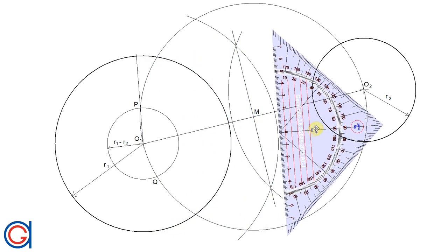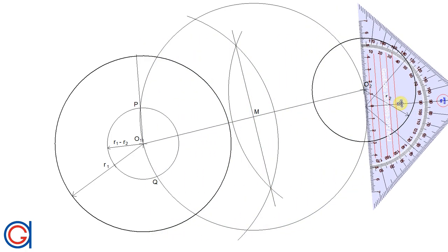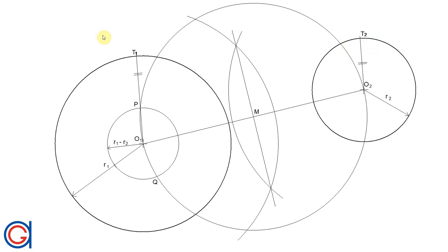Now we're going to draw another line parallel to this from point O2 until it touches the outside of the circle, which will be our second tangent point T2.